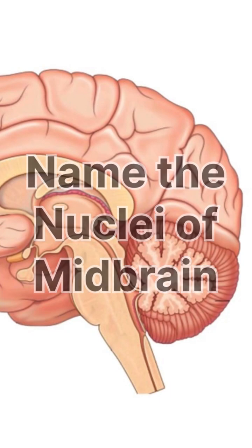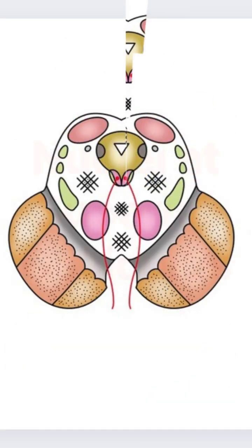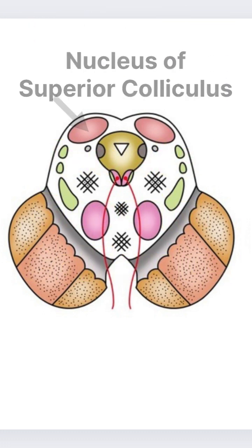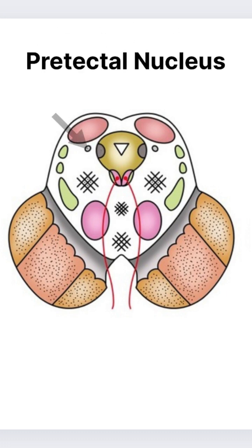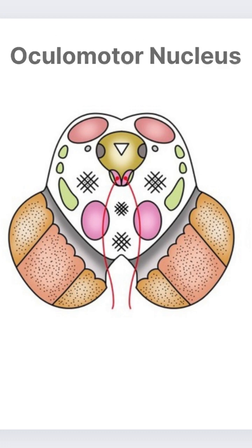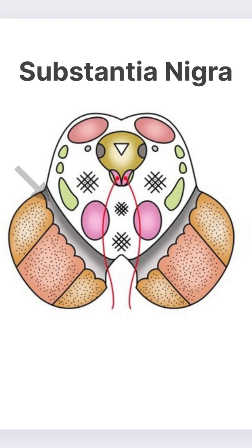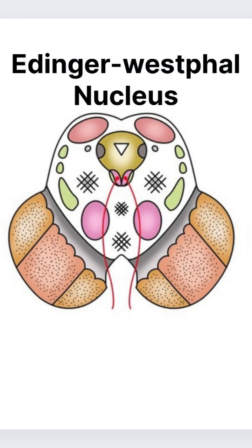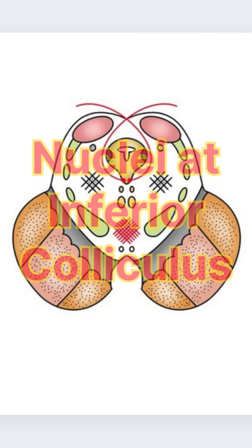Let us name the nuclei of the midbrain. For that purpose, there are two transverse sections at the level of superior and inferior colliculi. First, the nuclei at the level of superior colliculus: first, nucleus of superior colliculus; second, mesencephalic nucleus of trigeminal nerve; third, pre-tectal nucleus; fourth, oculomotor nerve nucleus; fifth, substantia nigra; sixth, red nucleus; and seventh, Edinger-Westphal nucleus.